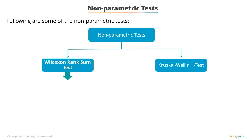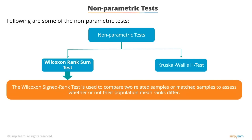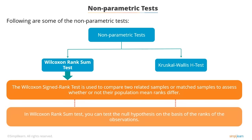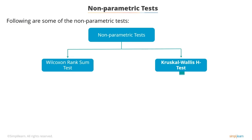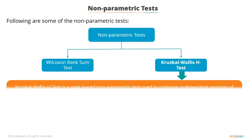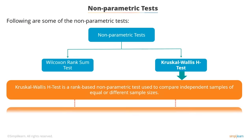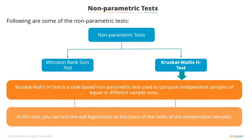The Wilcoxon signed rank test is a non-parametric statistical hypothesis test used to compare two related samples or matched samples to assess whether their population mean ranks differ. You can test the null hypothesis on the basis of the ranks of the observations. The Kruskal-Wallace H-test is a rank-based non-parametric test used to compare independent samples of equal or different sample sizes, testing the null hypothesis on the basis of the ranks of the independent samples.